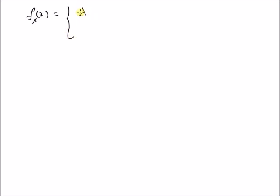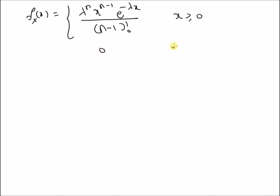Hello, welcome. In this short video let us look at the mean and variance of the Erlang random variable. The pdf of this Erlang random variable is defined as f(x) = λⁿ · xⁿ⁻¹ · e^(−λx) / (n−1)! for x ≥ 0, and 0 elsewhere. So this is the pdf of an Erlang random variable.